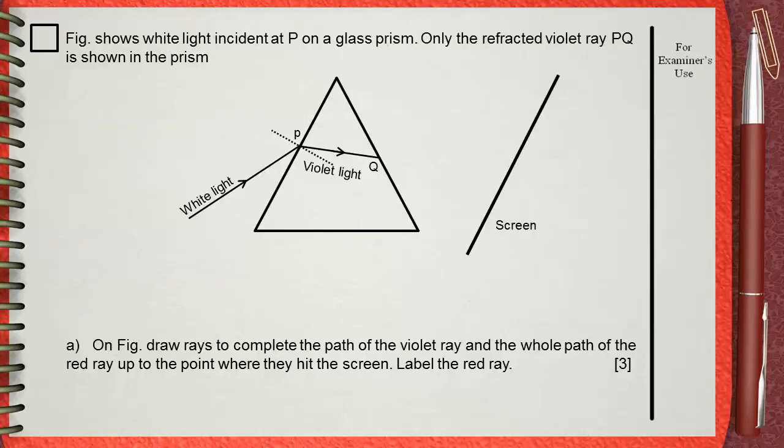Figure shows white light incident at P on a glass prism. Only the refracted violet ray PQ is shown in the prism.